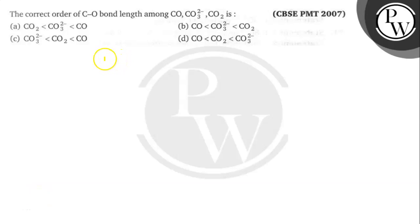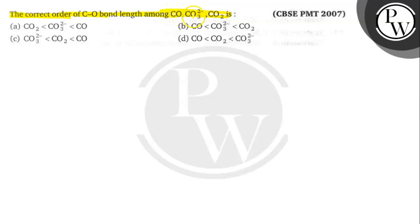Hello everyone, let's read this question. The question says that the correct order of CO bond length among CO, CO₃²⁻, and CO₂ is — we have to find the correct decreasing order of bond length among CO, CO₃²⁻, and CO₂.